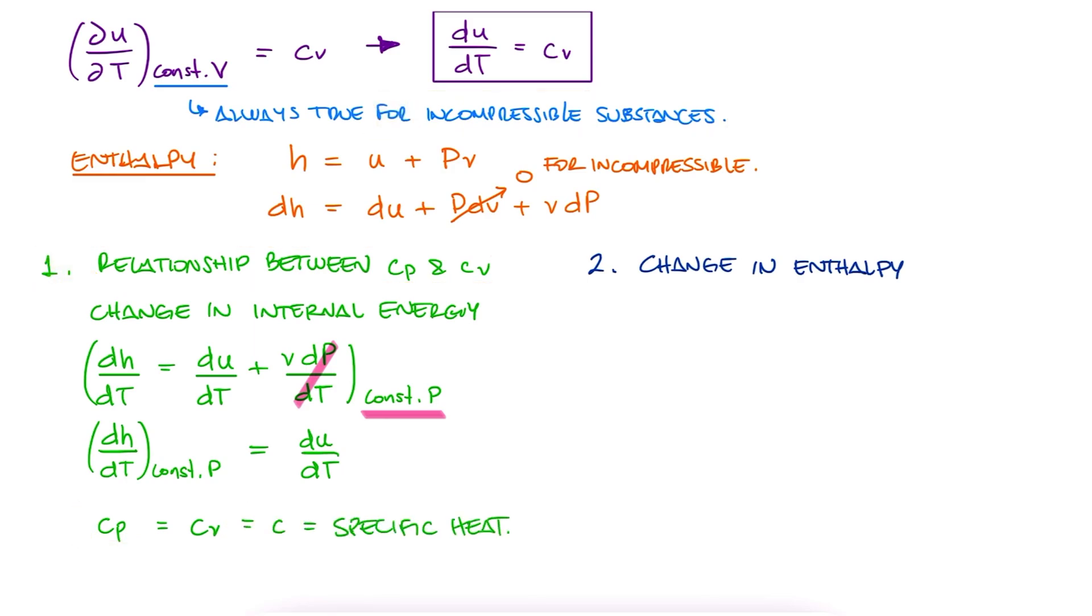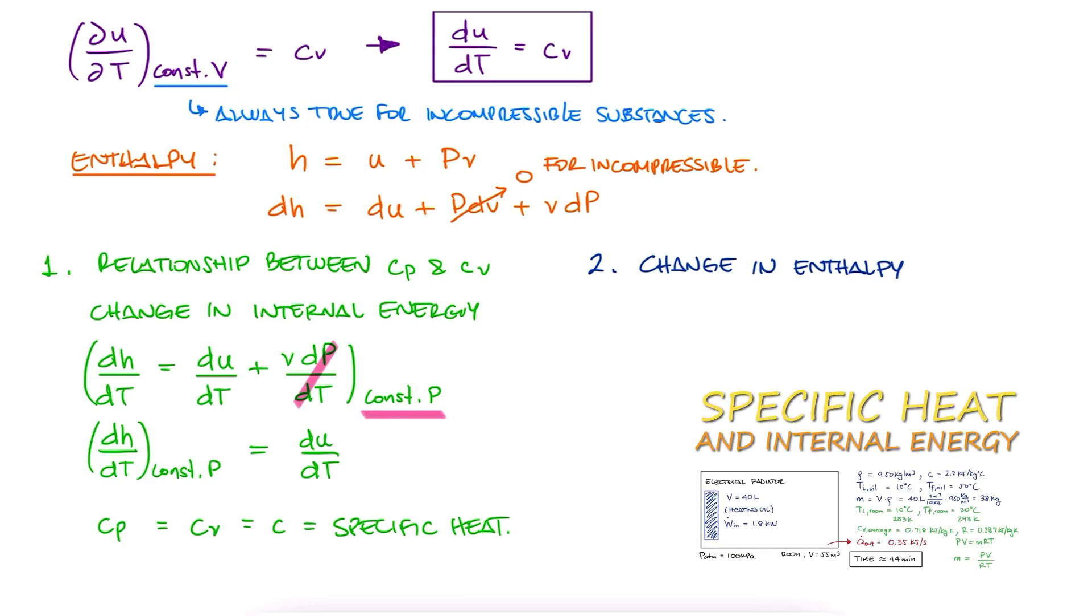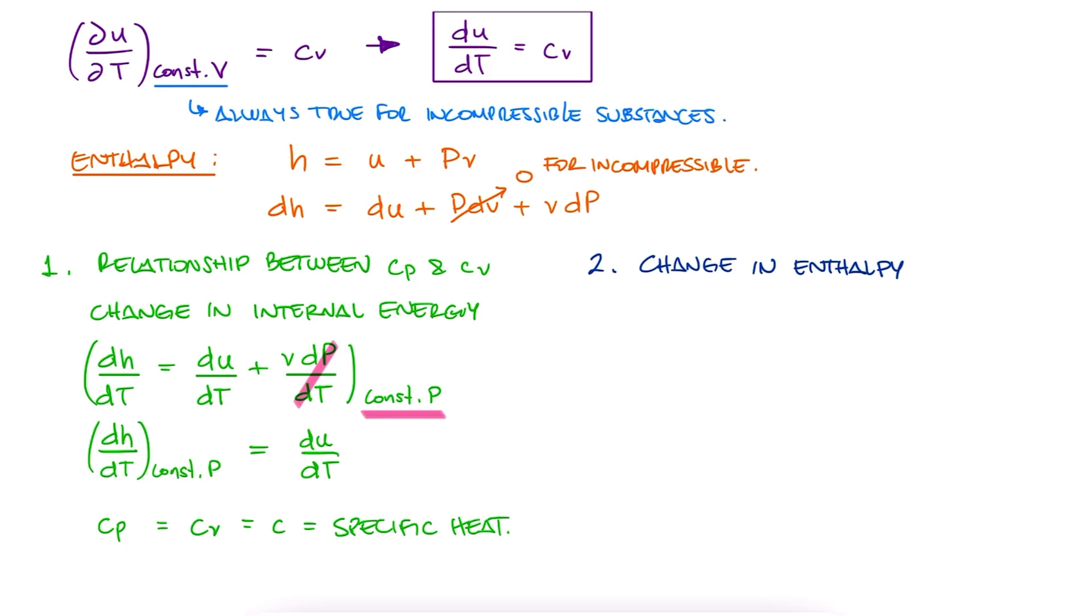And this is why, for that one example of the previous lecture about specific heats, linked below, it didn't matter which one of the specific heats were given to us for the heating oil. Since the heating oil is an incompressible fluid, cp equal to cv, or just c.